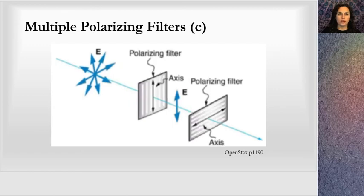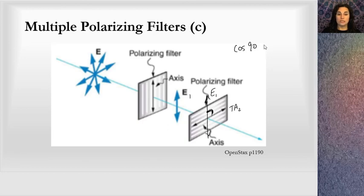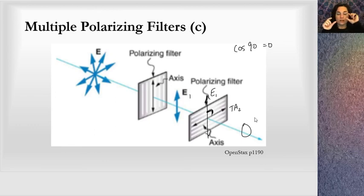The last example: if we take that second polarizing filter and orient it perpendicularly, there's a 90-degree angle between the electric field E1 and the second transmission axis. Since cosine of 90 degrees is zero, we get zero light out. This is how sunglasses work with glare — you know the orientation of the polarization of the light outside, orient the lens perpendicularly to it, and you can completely block that glare. Very fascinating.